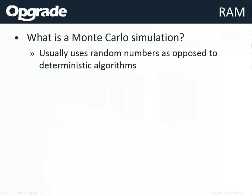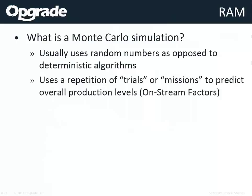Monte Carlo simulation uses random numbers instead of a single plug-in numeric answer, to come up with a series of trials or missions where it runs through time. If it's a 30-year or 20-year life cycle, it runs through those years, comes up with a predicted output, and does it again many times so that you have a good sample size to determine your mean production level.